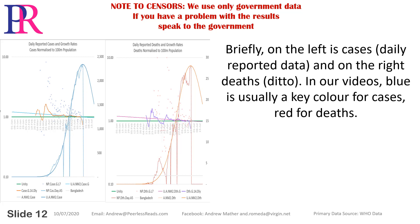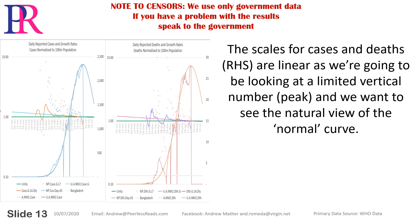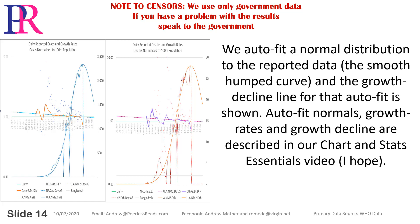Briefly, on the left is cases — daily reported data — and on the right, deaths, ditto. In our videos, blue is usually a key colour for cases, red for deaths. The scales for cases and deaths on the right-hand side are linear, as we're going to be looking at a limited vertical number — the peak — and we want to see the natural view of the normal curve. We auto-fit a normal distribution to the reported data, the smooth humped curve, and the growth decline line for that auto-fit is shown.